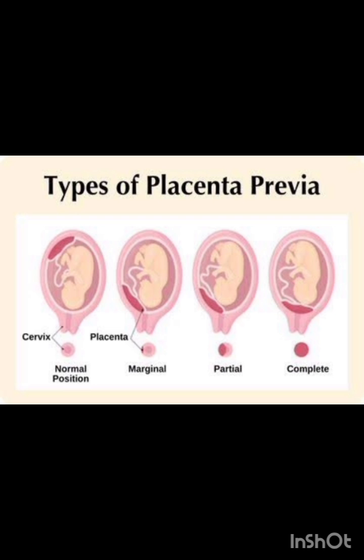Type 3: Marginal placenta previa — the placenta is at the edge of the cervical opening. Type 4: Low-lying placenta — the placenta is near the cervical opening but not covering it.